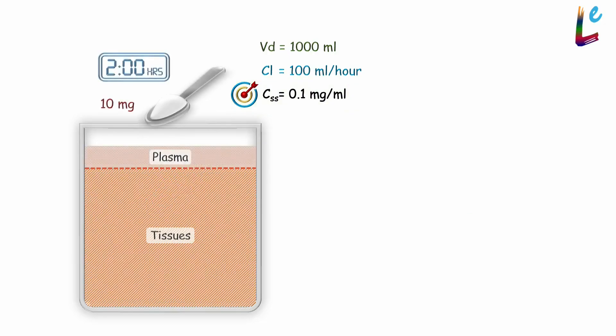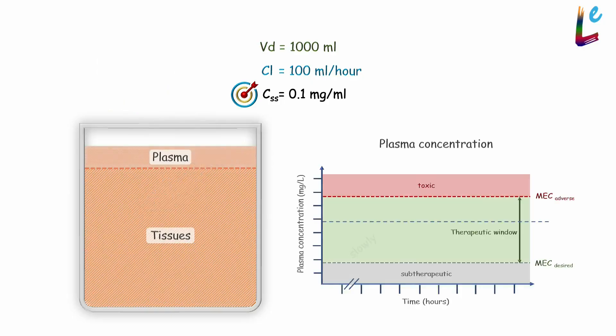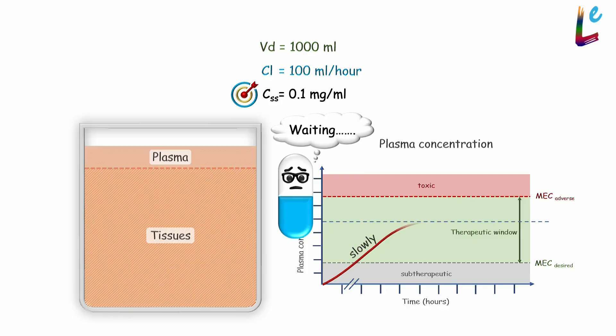With repeated doses, the drug accumulates in the body and the plasma concentrations will slowly rise. Over time, we will eventually achieve the target plasma concentration of 0.1mg per ml.